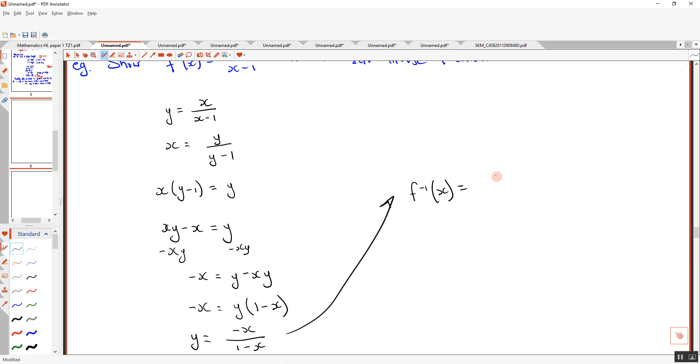Now, this is what we have got for our inverse. Now, what I could do is, with this, I could multiply every single term by negative 1. Okay? If I multiply the top line by negative 1, if I multiply the bottom line by negative 1, am I changing anything here?